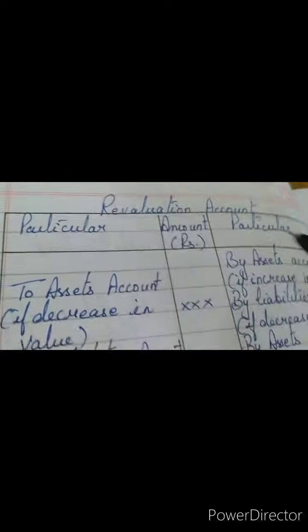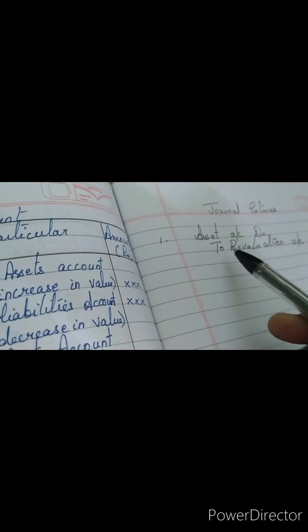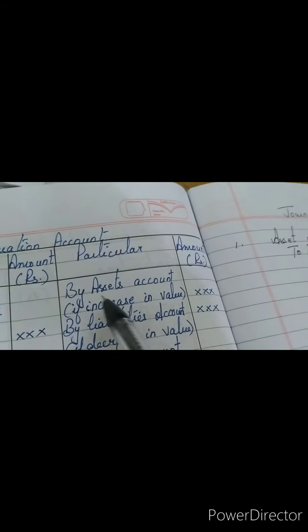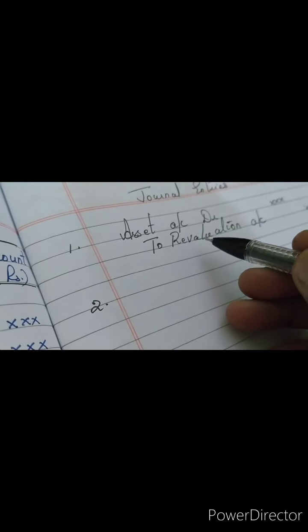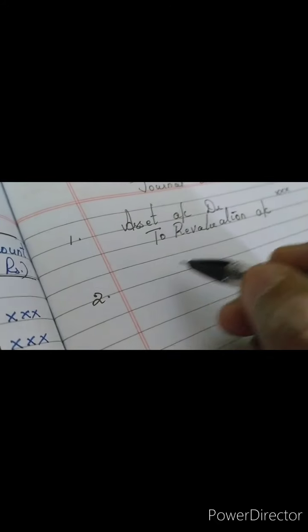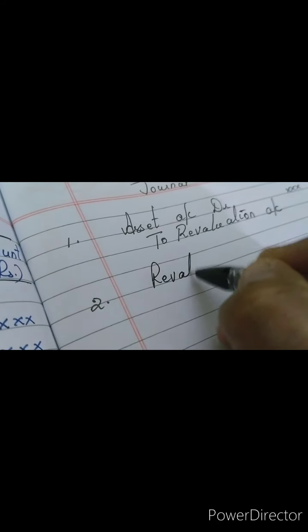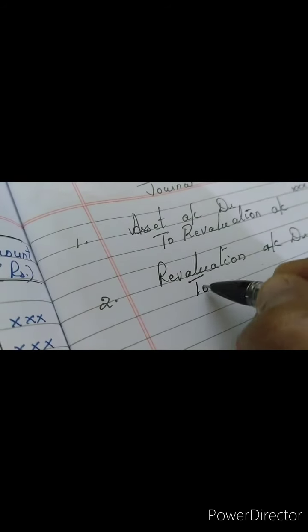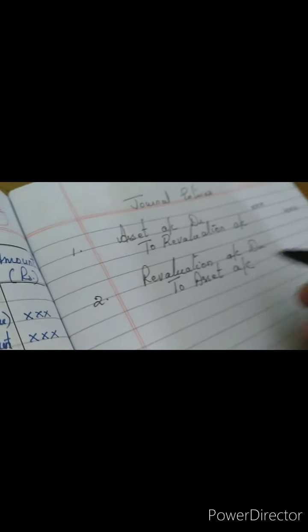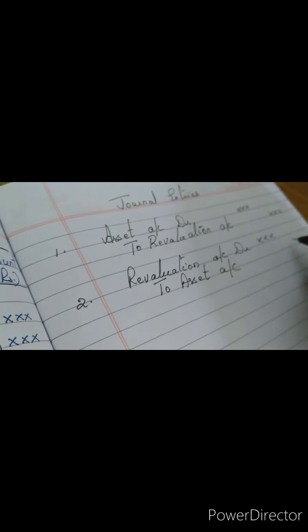When we post it in the revaluation account, increase in the value of asset has to be credited. In revaluation, we write: by assets account — increase in value — and put the amount. The next journal entry is decrease in the value of asset, which is the reverse of this entry. Revaluation account is debited to asset account, because revaluation is an expense. So we debit revaluation account and asset account will be credited. On the revaluation account debit side, we write: asset account — decrease in the value of asset.